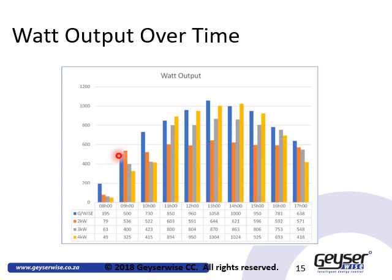Slightly later, the 3 kW element performed fairly well, although the 3 kW and the 4 kW elements still stayed below the norm. As time went on during the morning, we can see the comparative performance of the different elements. By about 11 o'clock, when the sun was at peak, the 4 kW element started performing at a better ratio, whereas the 2 kW and 3 kW element output was fairly low.